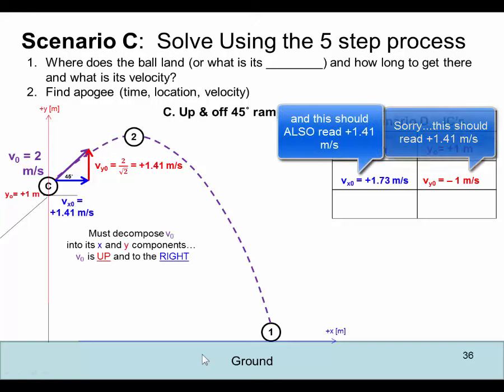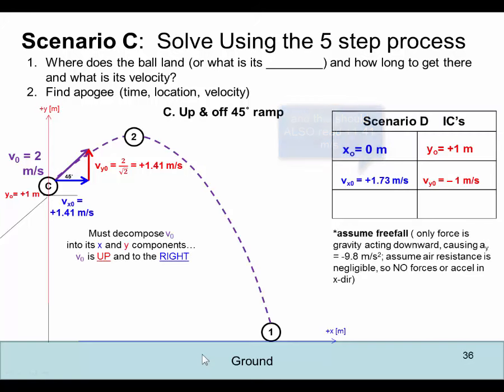And sorry, this should be 1.41 over here. And to get our accelerations, we've got to look at what's causing the acceleration. Remember, forces cause acceleration, so what forces are acting on this object as it's flying through the air? We're not going at a high speed, it's flying through the air, nothing's touching it, the only thing that's acting on it is gravity, and that's our free-fall assumption. And you need to explain that a bit as I did here.